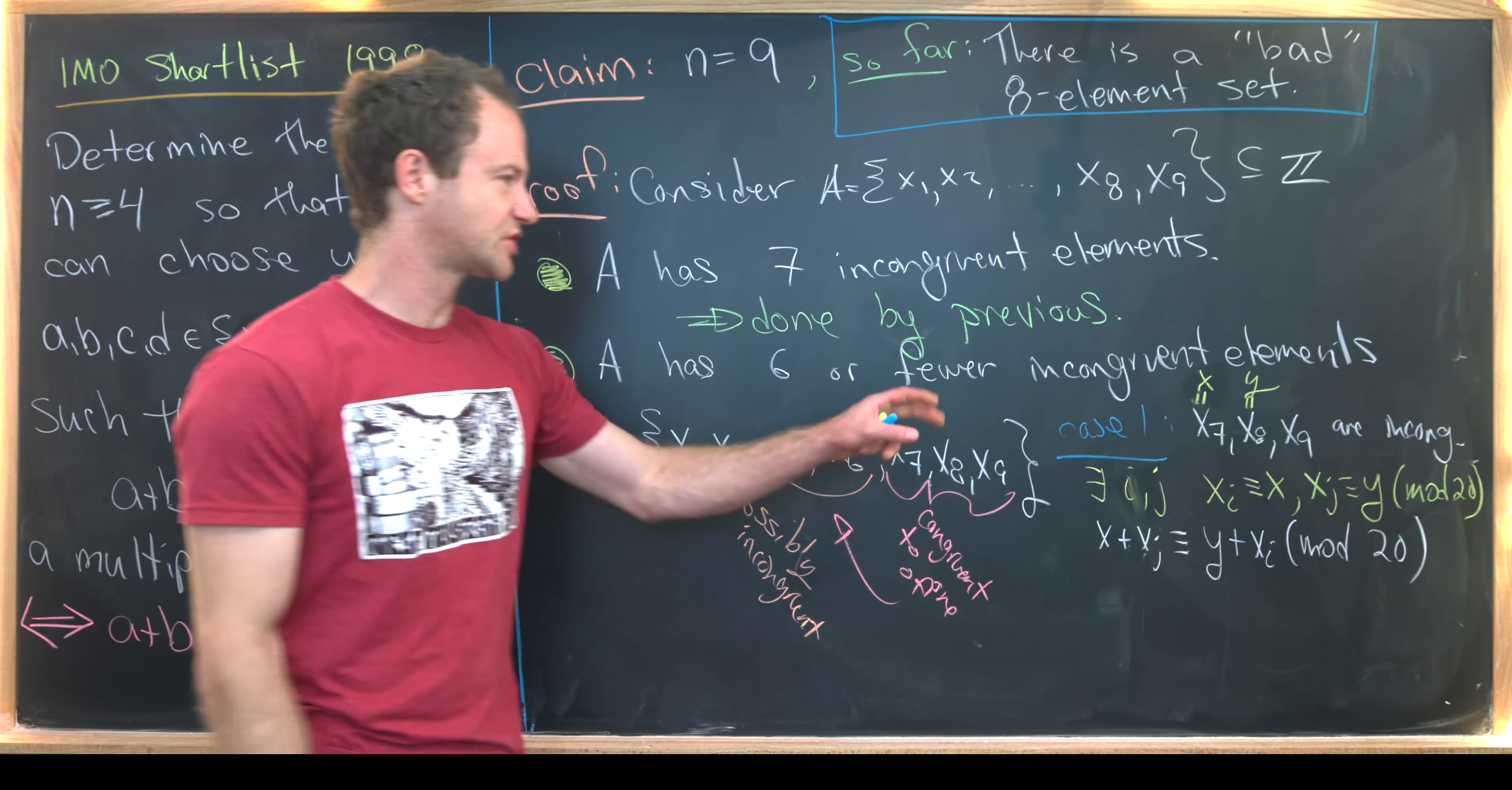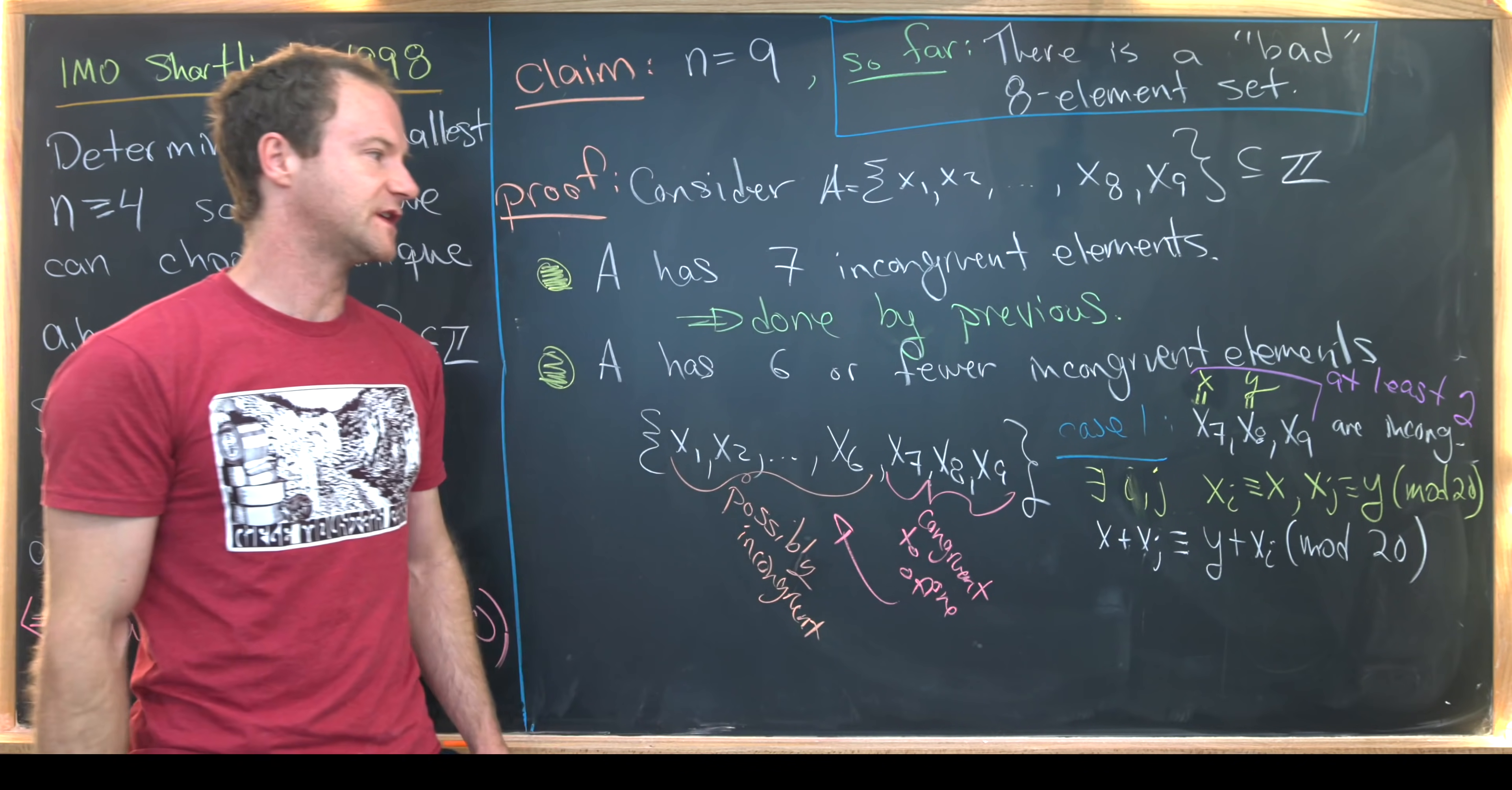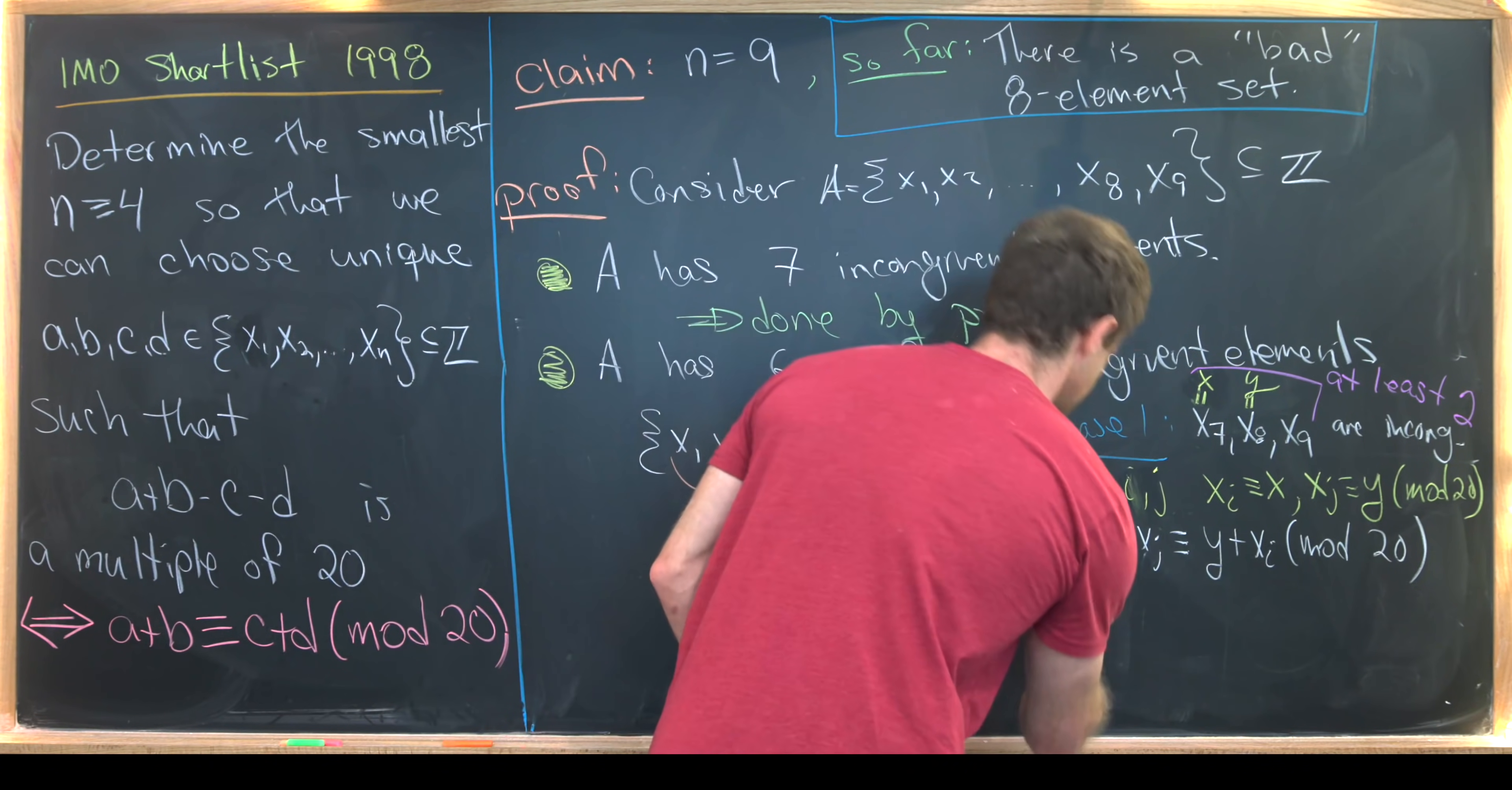And now let's look at the second case, which can really just be spun off of this first case. And that would be at least two of these are incongruent. Well, it's pretty much the same argument because we only use the fact that two of these were incongruent here. So we had two were incongruent, but they were congruent to something on this list. And then we did opposite sums of them. Well, that's clearly just going to be congruent mod 20. Okay, so now let's look at case two.